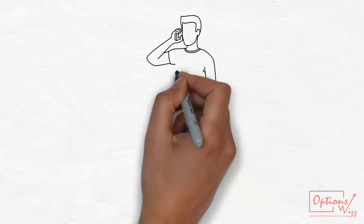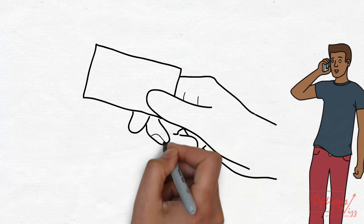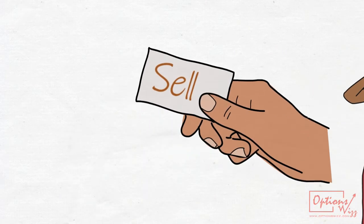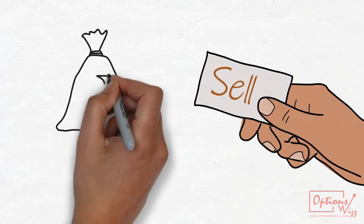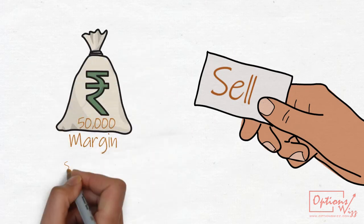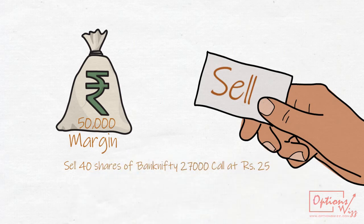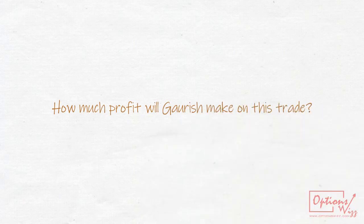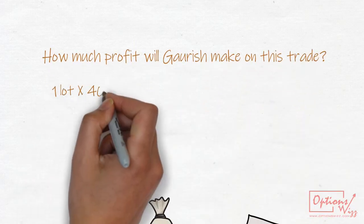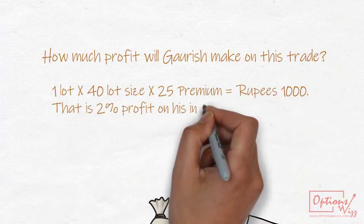Let us consider an example. My friend Gorish decides to do exactly opposite. Instead of buying, he sells this option. He too had rupees 50,000 to invest. As you know with rupees 50,000 margin, Gorish will be able to sell only one lot of Bank Nifty, that is net quantity of 40. Gorish goes and sells Bank Nifty 27,000 call at rupees 25. How much profit will Gorish make on this trade? That is 2% profit on his investment. Gorish is happy about it.